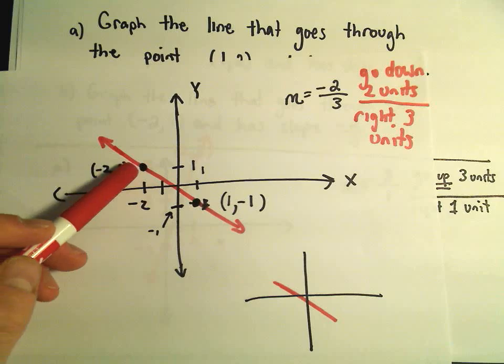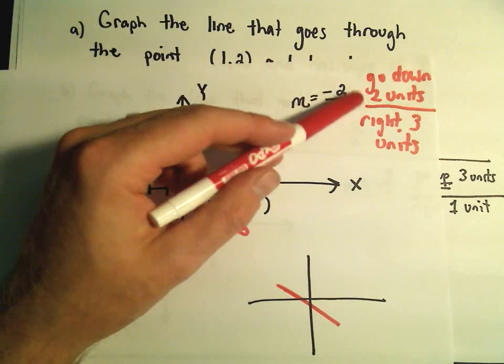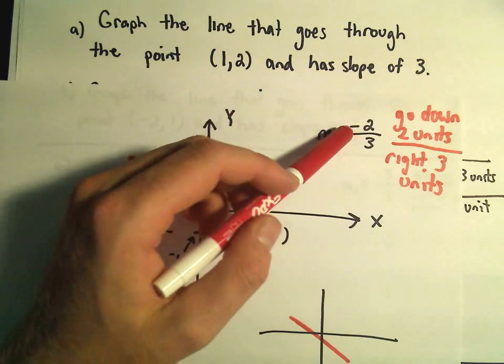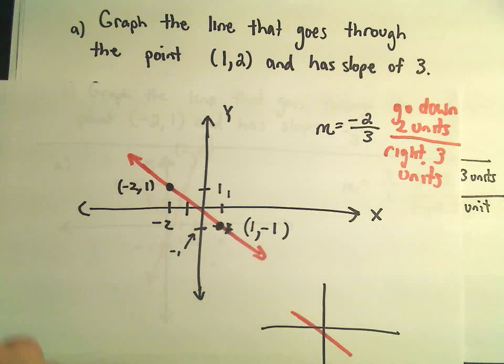All right, so again, just once you figure out your point, just think about the slope. Write it as a fraction if it's not a fraction already, like the first example. And I think just think about them kind of as being directions. And if you want to, you can always plot out more points as well.